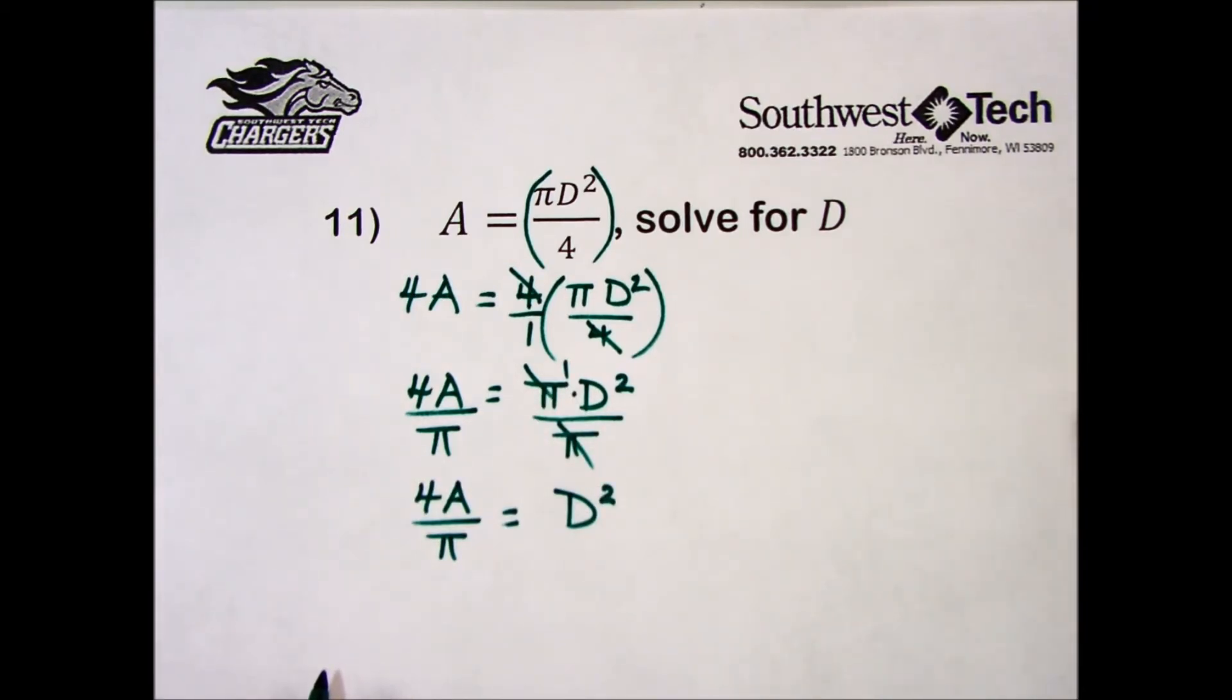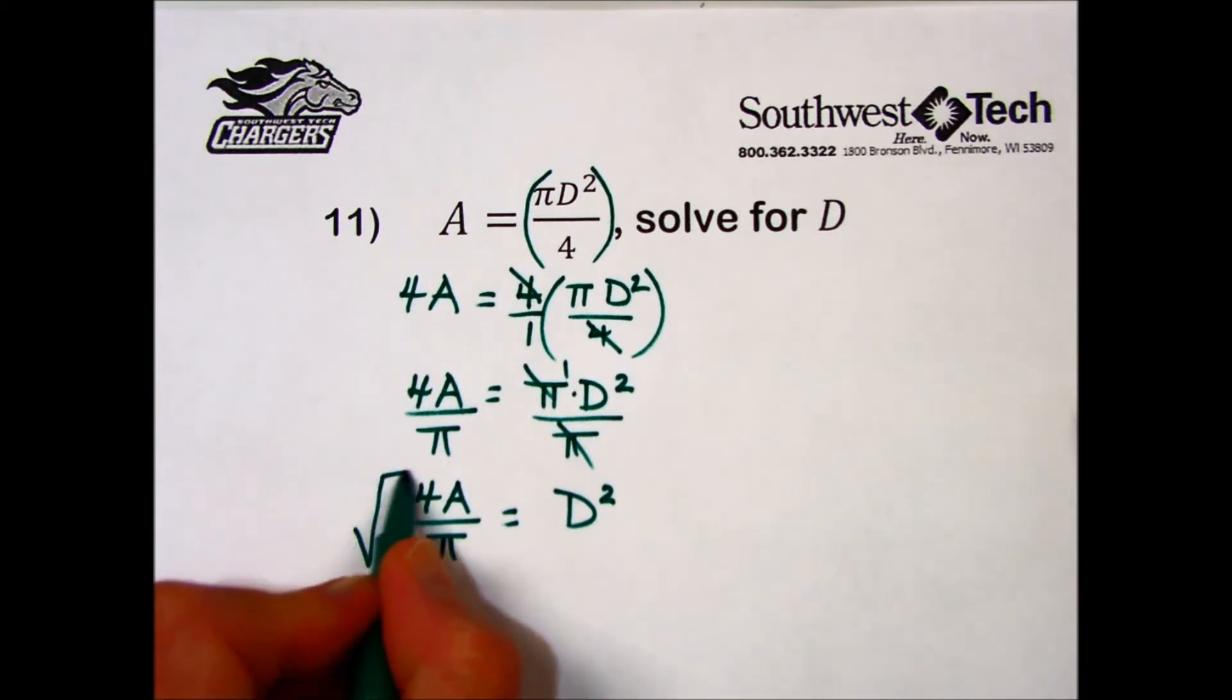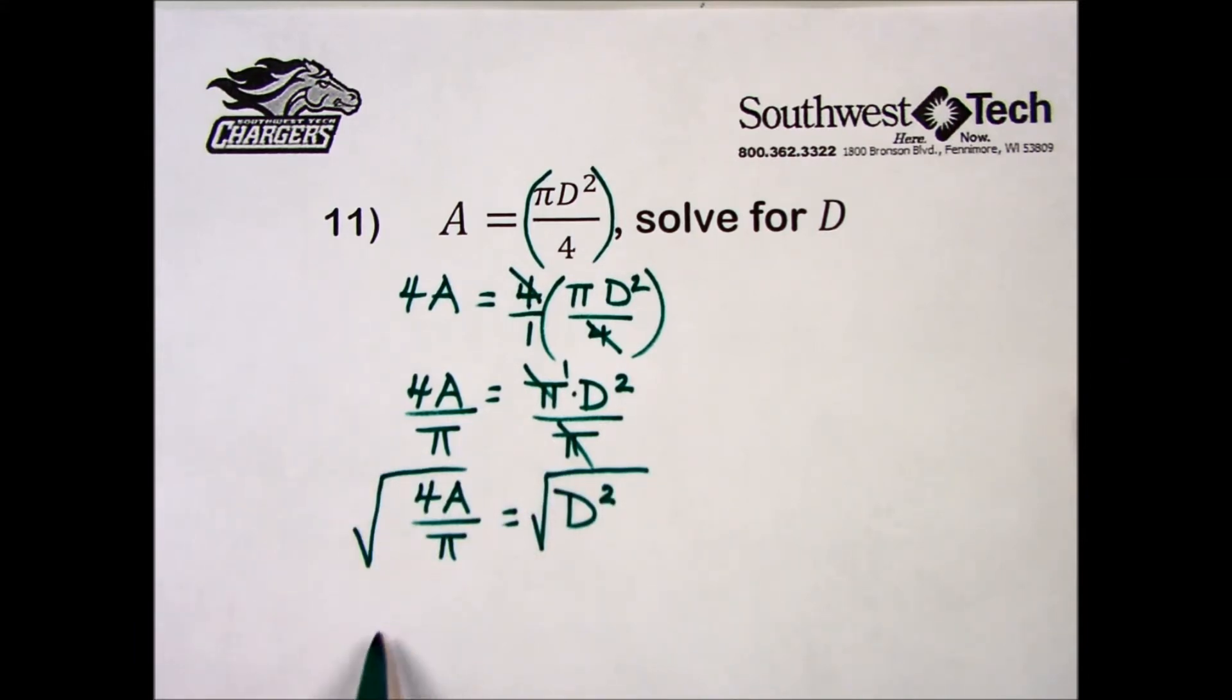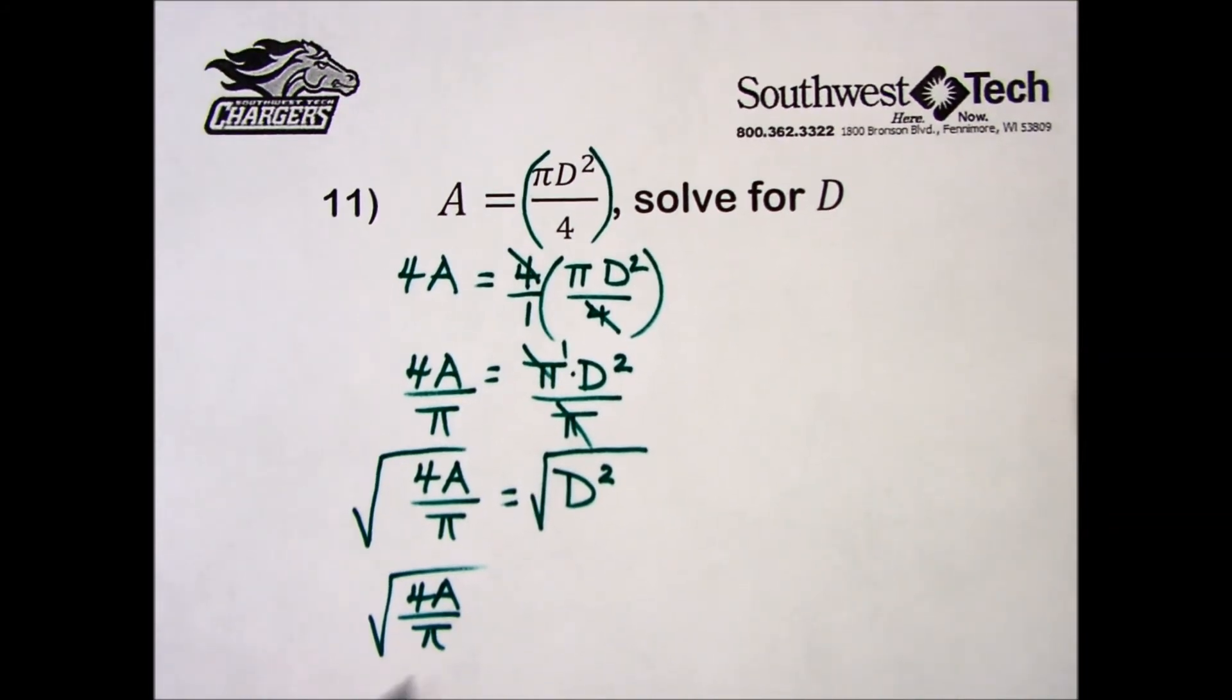Now, this one, to get D by itself, because it's squared, we have to do the undoing operation of a square, which is the square root, maintaining equality. What we do to one side, we do to the other side. On the left-hand side, we're taking the square root of the quantity 4A over pi. We'll leave it as is. And the square root of something that squared is just that something, which is giving us the value of D. The square root of D squared is D. We've solved the equation for the indicated variable.